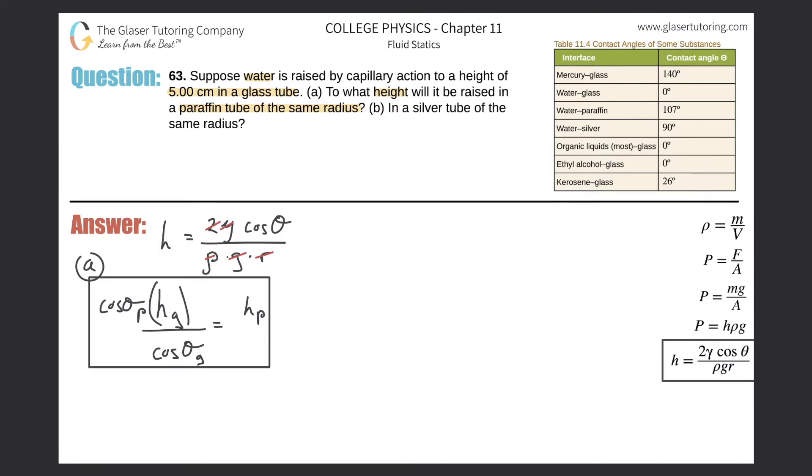So now I can plug it in. The cosine of the contact angle for the paraffin tube is in the table over here, 107 degrees. So cosine of 107 multiplied by the height in the glass tube. Now we can leave this in terms of centimeters. That's fine. These degrees are unitless. You're taking a degree divided by a degree, it's unitless. So it's just a simple ratio. So you can leave this in terms of centimeters. If you felt uncomfortable, by all means convert it into meters. Your answer will just be in meters. It doesn't matter. So the cosine of the contact angle for that of glass was zero degrees.